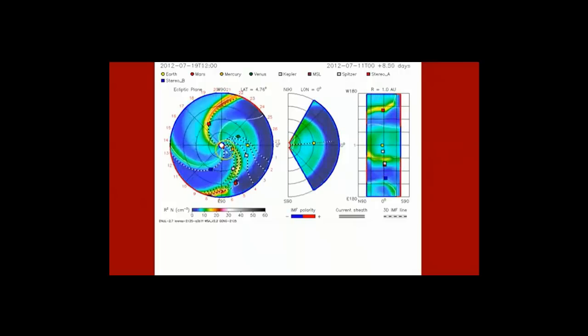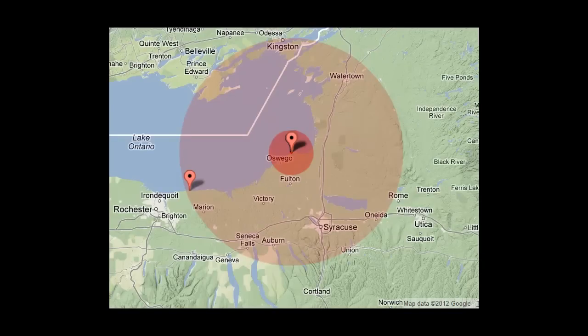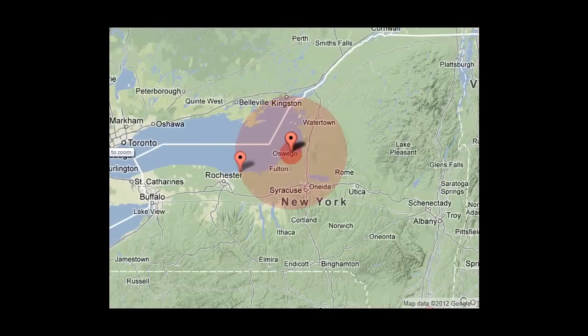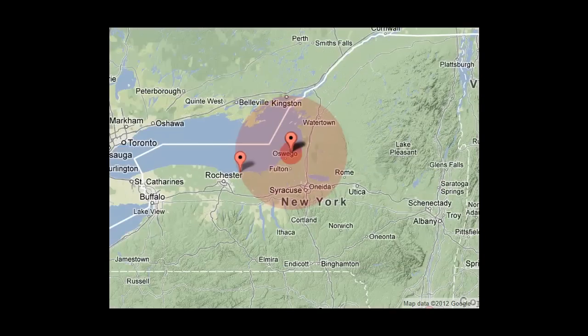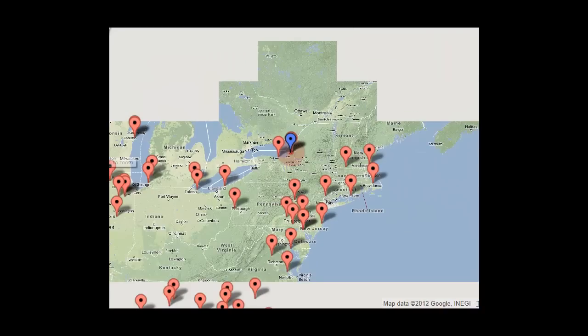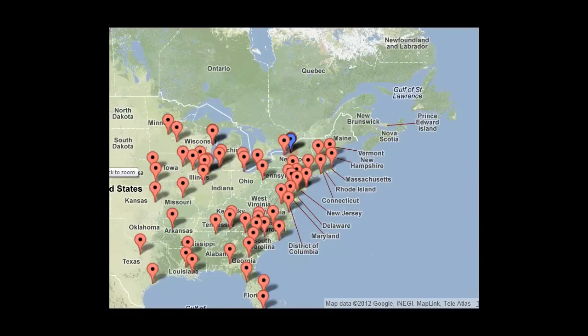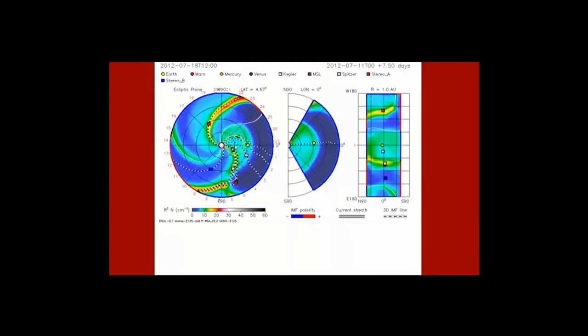Nuke Report: At Nine Mile Point in New York, there was a manual reactor scram when a reboiler failed, causing a loss of steam. This resulted in a degrading condenser vacuum and the backup failed as well. The unit is currently in a hot shutdown. This is a major concern as the X-flare impact will coincide with this area. The cause of the loss of both the primary and backup sources is under investigation.